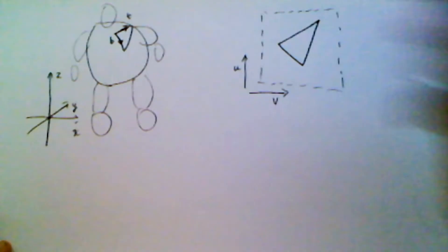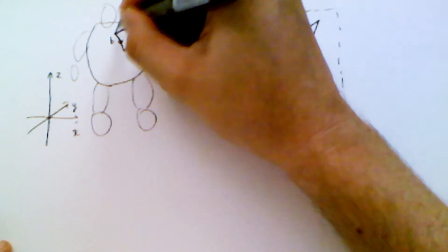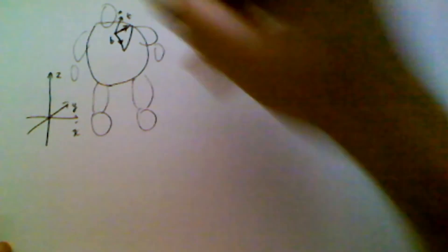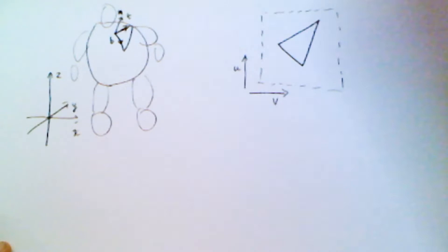And then, well, of course we also have a normal vector, not super important in this case. This is hard to read, but it's n for normal.